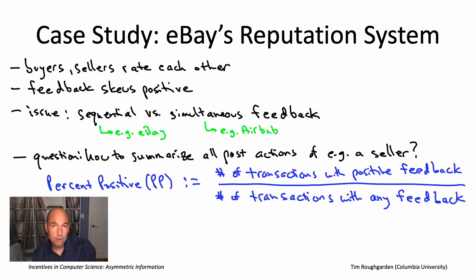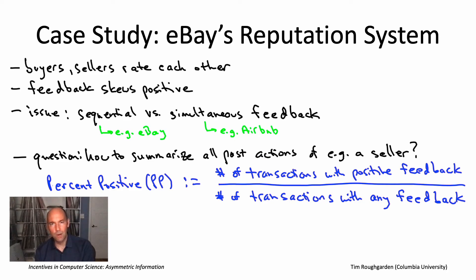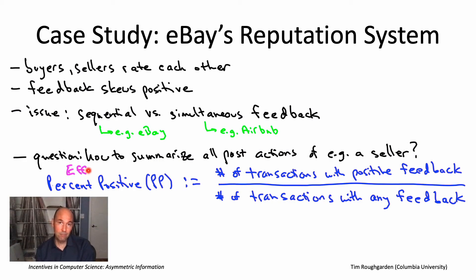The reason PP scores are misleading is that they ignore transactions where no feedback was given whatsoever — and that throws away potentially useful information. If you see a seller with an unusually high number of transactions with no feedback at all, that should be a red flag. This suggested a simple but important tweak that eBay made sometime in the last decade.